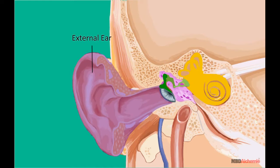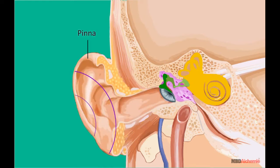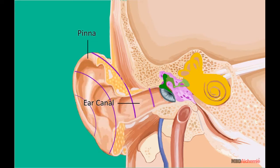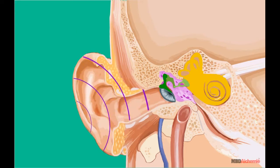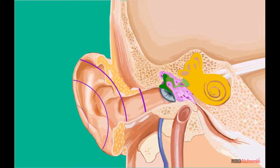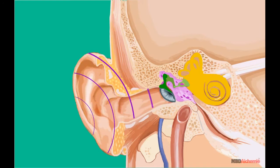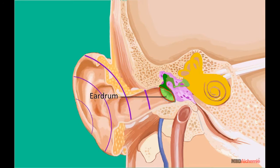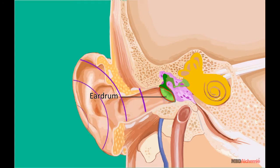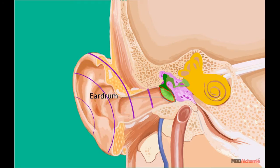The external ear consists of the most visible ear structure called the pinna and the ear canal. The pinna acts as a sound collector to guide sound waves down the ear canal so that they impinge against the eardrum or tympanic membrane, causing it to vibrate.